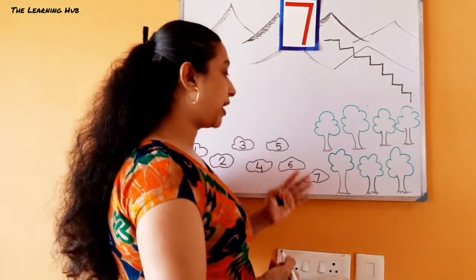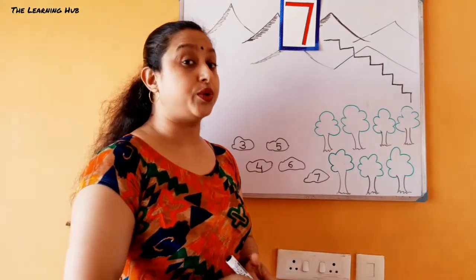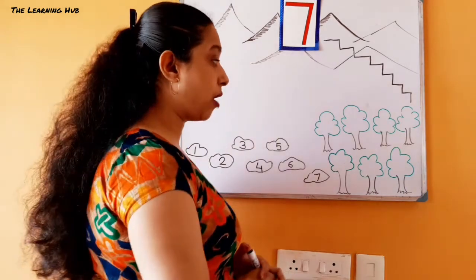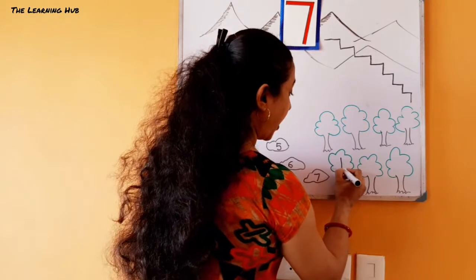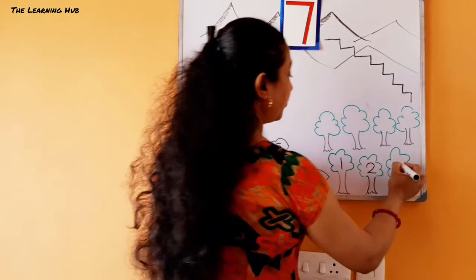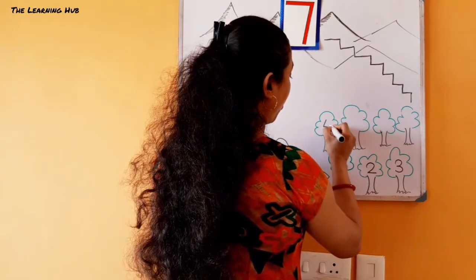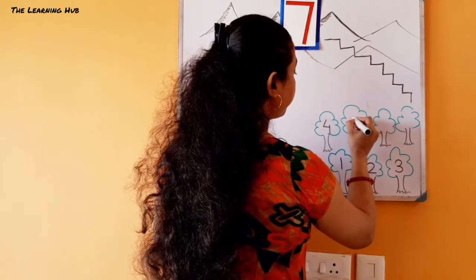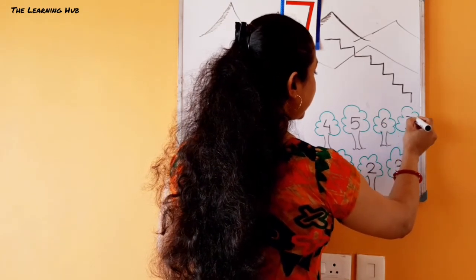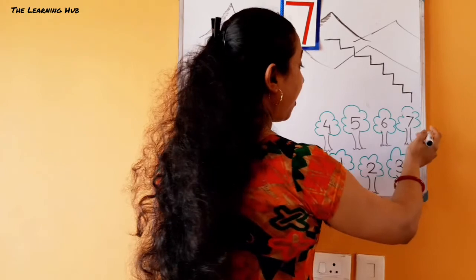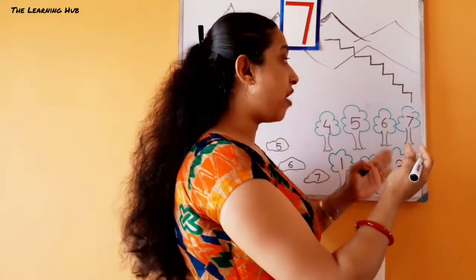Now we can see our forest ahead that we need to cross. Could you please count the number of trees? One, two, three, four, five, six, seven! We are about to reach now!